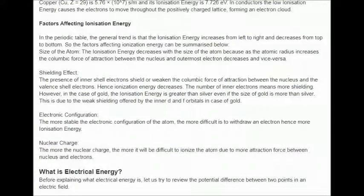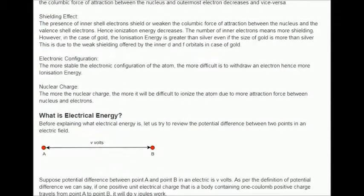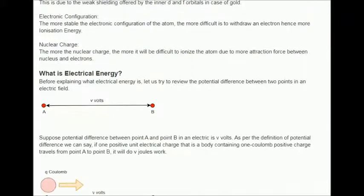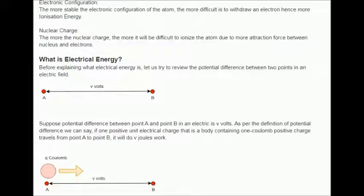What is electrical energy? Before explaining what electrical energy is, let us try to review the potential difference between two points in an electric field. Suppose potential difference between point A and point B in an electric field is V volts. As per the definition of potential difference, we can say, if one positive unit electrical charge, that is a body containing one Coulomb positive charge travels from point A to point B, it will do V joules work.